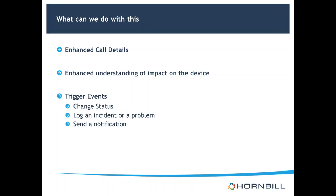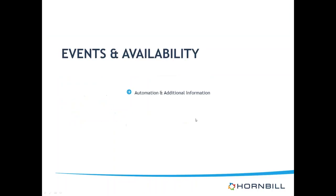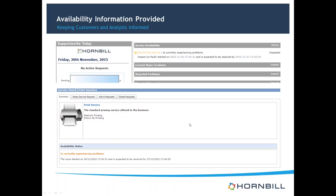If we do have any items that are impacted within the service desk, on the SW Today page — if our items have been set up to report on availability — we can already be told when we log in that the print service is currently experiencing problems. Our customers can dial into the self-service portal and, if they've got access to the service, they'll be able to see the status of the service either via the notifications bar or within details relating to the service itself.